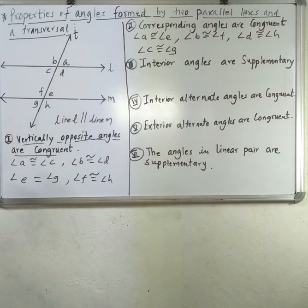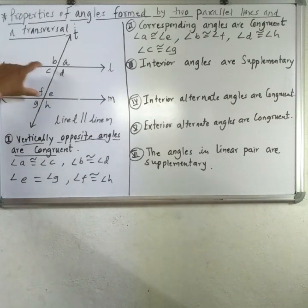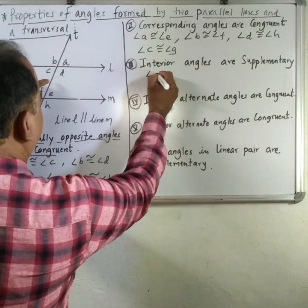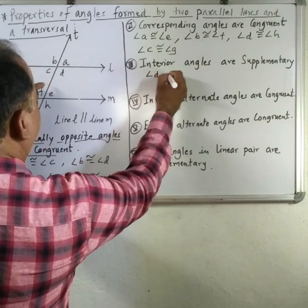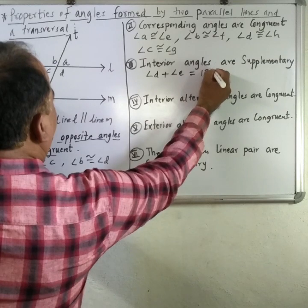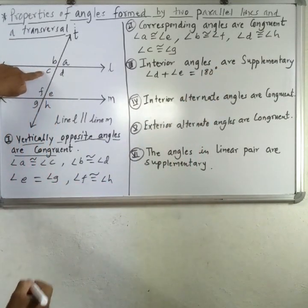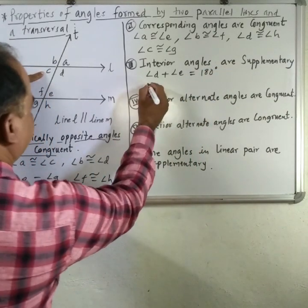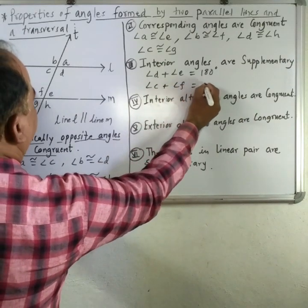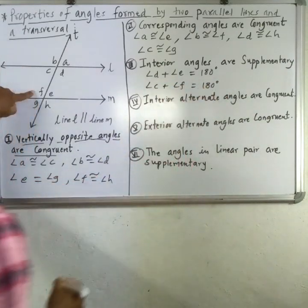The third property: when two parallel lines are intersected by a transversal, interior angles are supplementary. So angle D plus angle E equals 180 degrees, and angle C plus angle F is also 180 degrees.